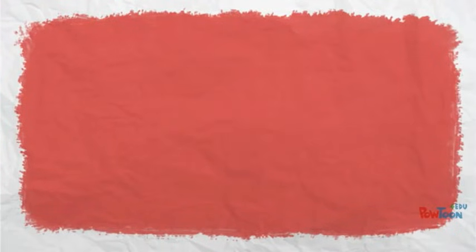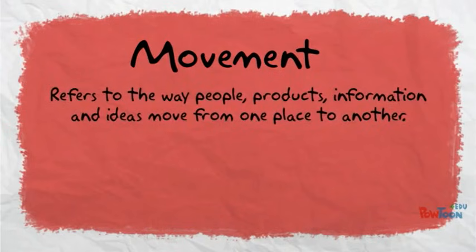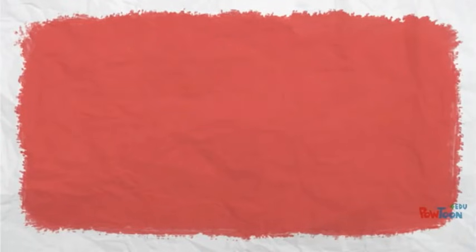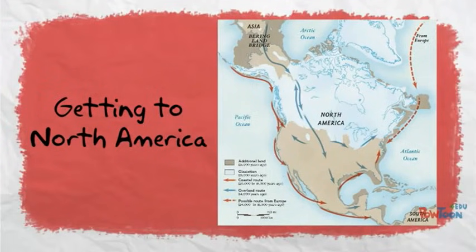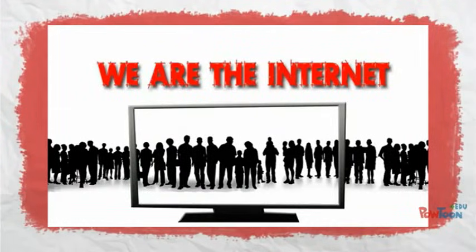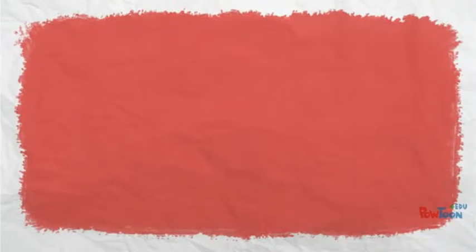Last on my list is movement. Movement refers to the way people, products, information, and ideas move from one place to another. This can be local — such as how did you get to school today? — or it can be global, such as how did humans get to North America? The internet has greatly changed this theme because information, news, and ideas can be moved instantaneously across the entire globe.